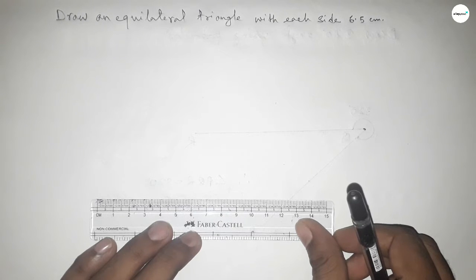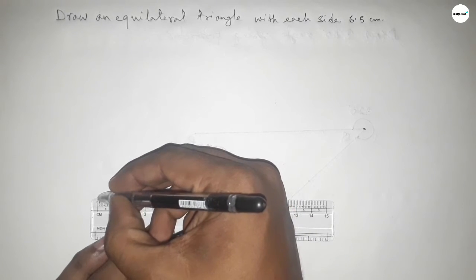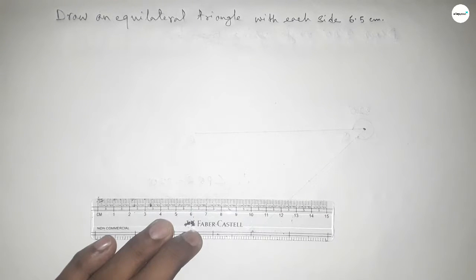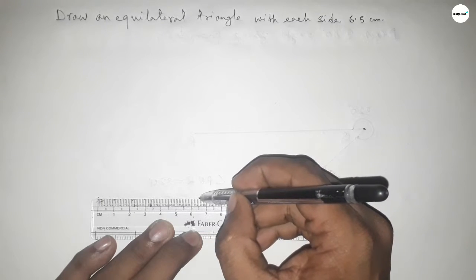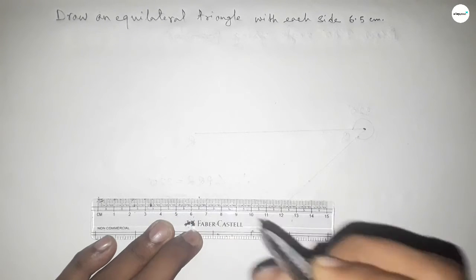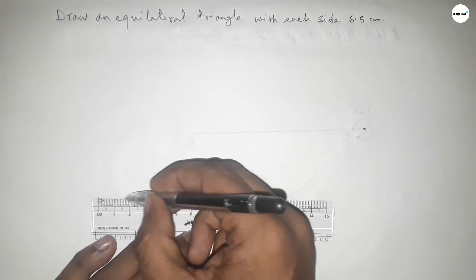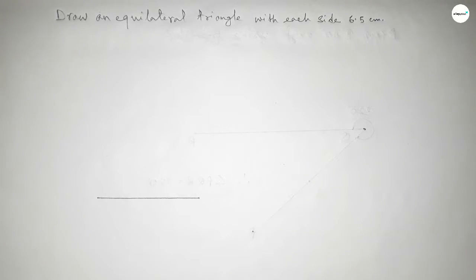So this is starting 0 and this is 1, 2, 3, 4, 5, 6 and this is 6.5. So first drawing a line of length 6.5 centimeter and this is A and B. So line AB equal to 6.5 centimeter.